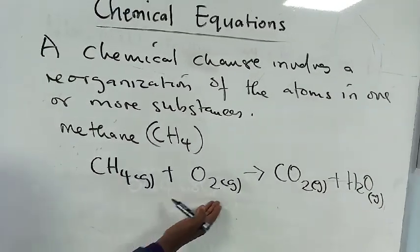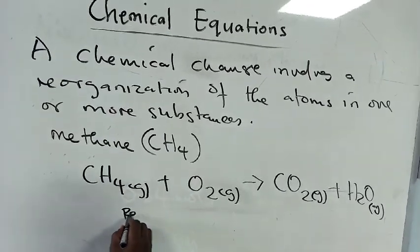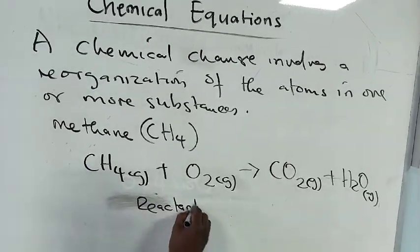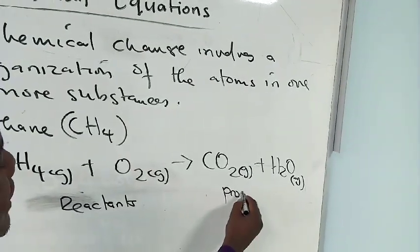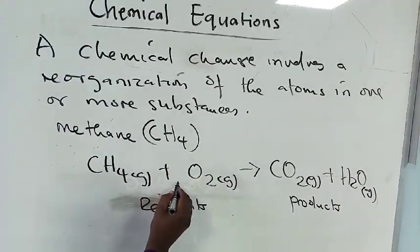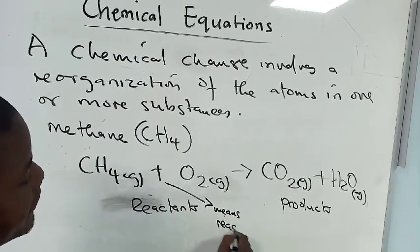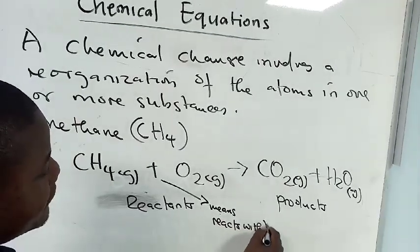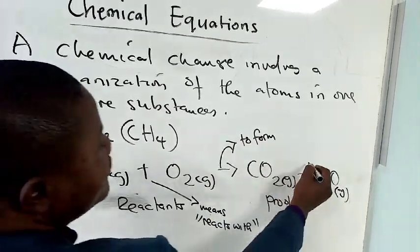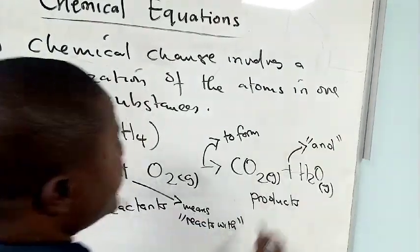On the left hand side of the arrow, these are called reactants. Then on the right hand side of the arrow we have products. The plus sign on the left hand side of the arrow means 'reacts with.' The arrow means 'to form.' Then the plus sign on the right hand side means 'and.'